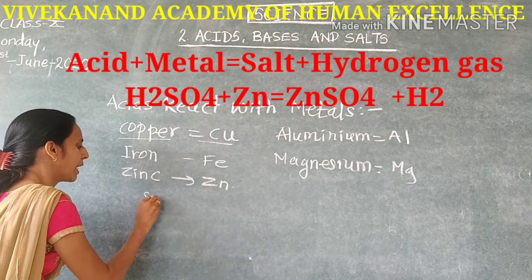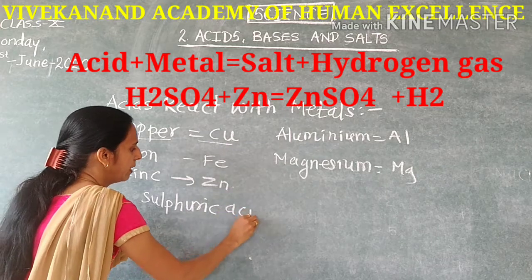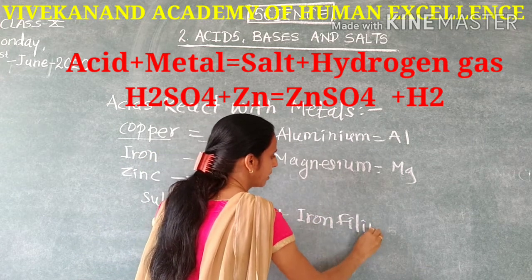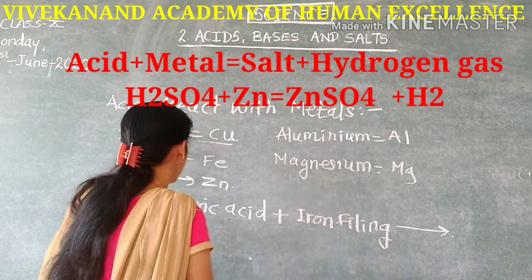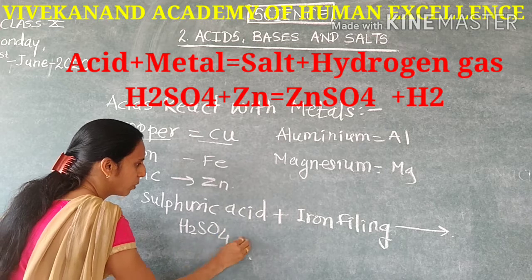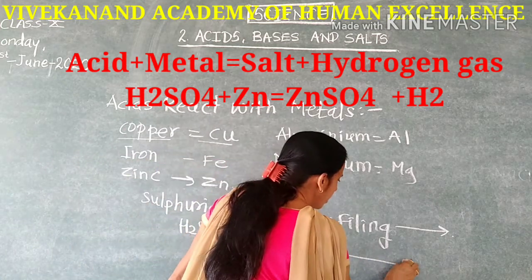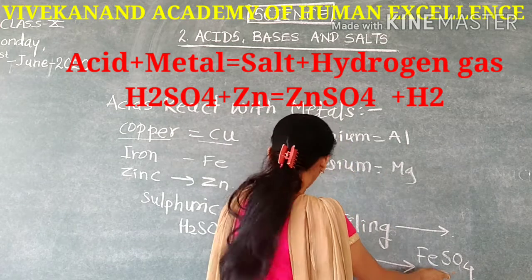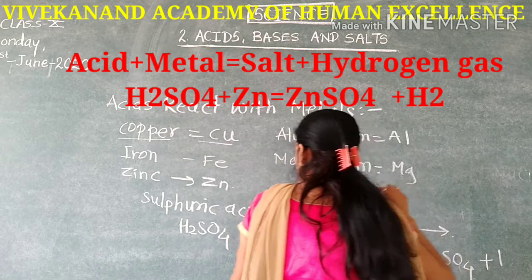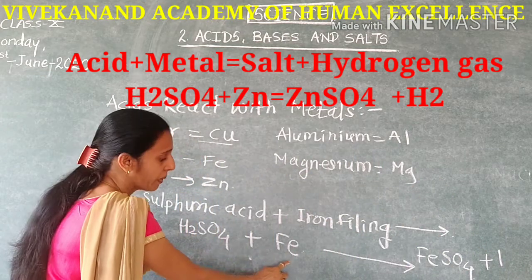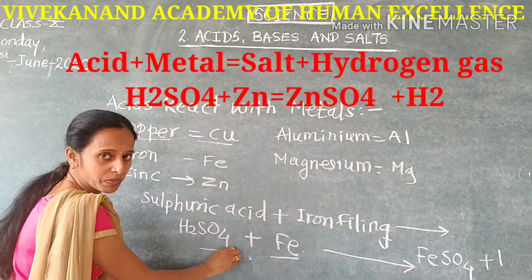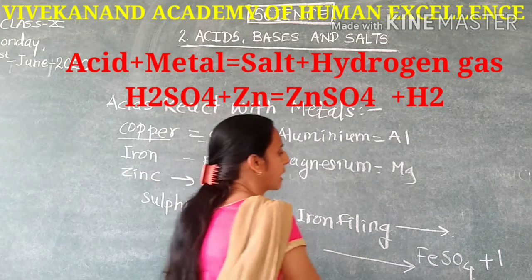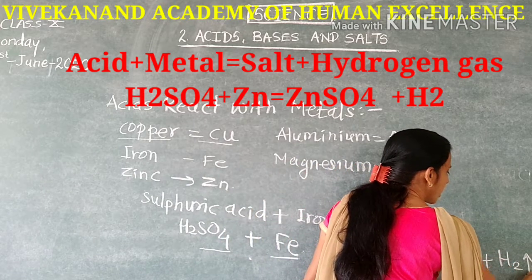We can take another acid also. Suppose I take HCl and iron filings. In the chemical reaction, due to the presence of Cl from HCl, it changes into FeCl3 — iron chloride — and again hydrogen gas is released. Here we need to balance the chemical reaction. In 9th standard we learned how to balance chemical reactions. The part present at the right side is called the product, and the part at the left side are the reactants.